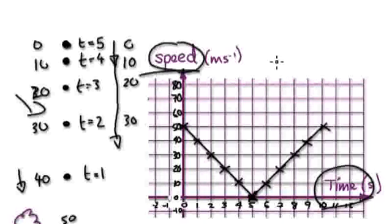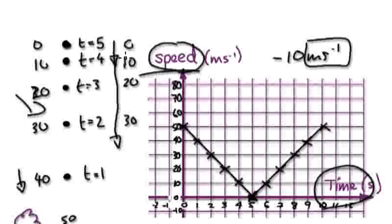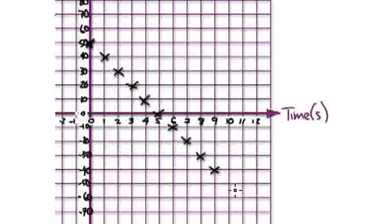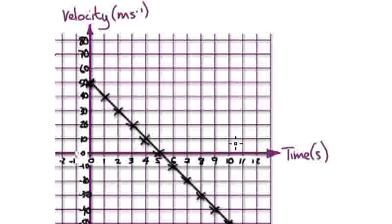The speed there is 10, but the velocity is negative 10. When you look at speed, you don't know which direction — but the minus sign is really useful. So we plot negative 10; then at seven seconds negative 20, eight seconds negative 30, nine seconds negative 40. It hits the ground at negative 50 meters per second. Your velocity-time graph is a straight line from +50 down to -50.